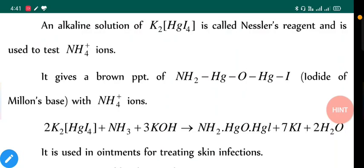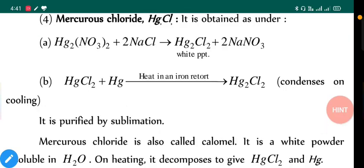It is used in ointment for treating skin infections. Next, mercurous chloride Hg₂Cl₂, which shows lower oxidation state of mercury. It is obtained as under: Hg(NH₂)₂ with NH₄ gives Hg₂Cl₂. Just like previous reaction, we get Hg₂Cl₂. Hg₂Cl₂ with Hg will give us Hg₂Cl₂, condenses on cooling.